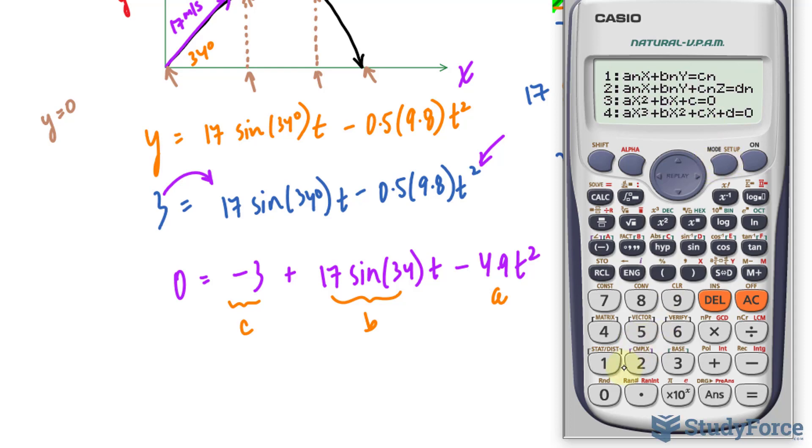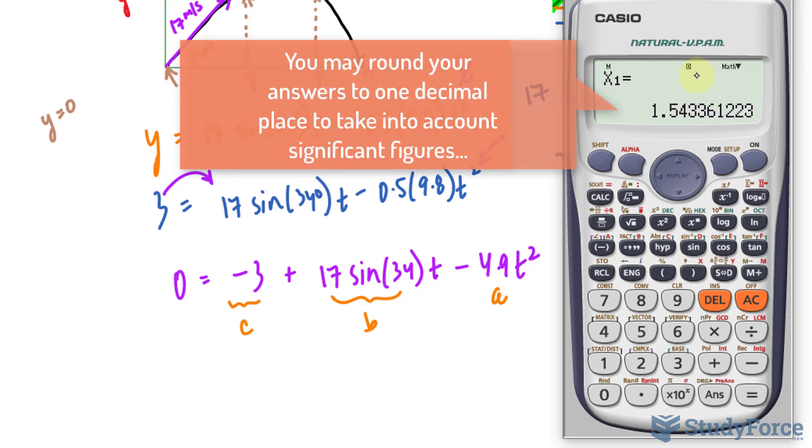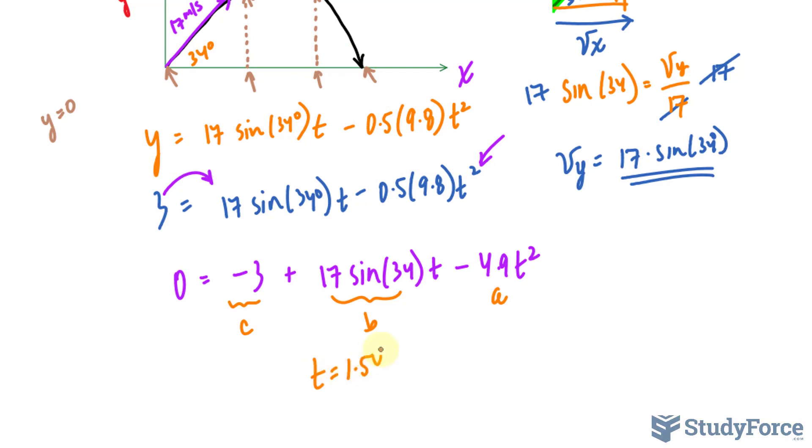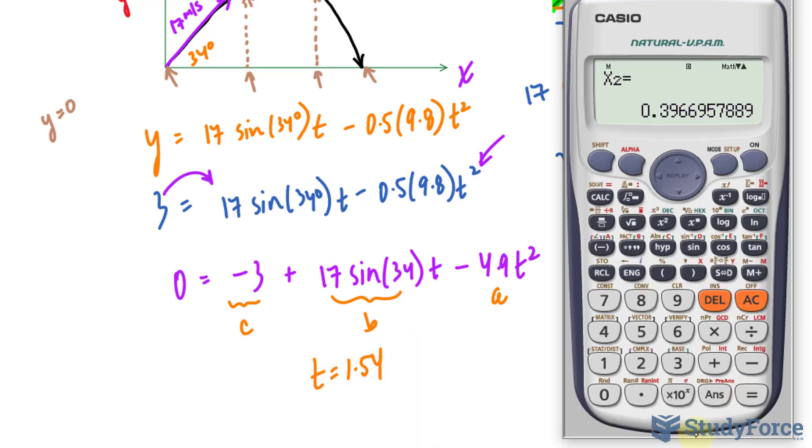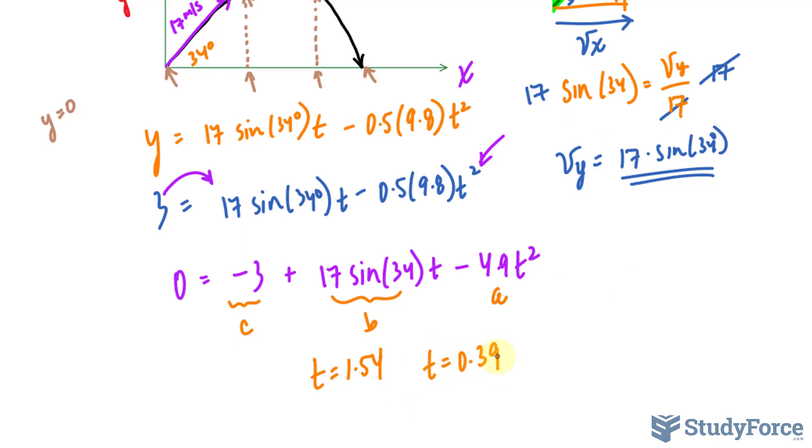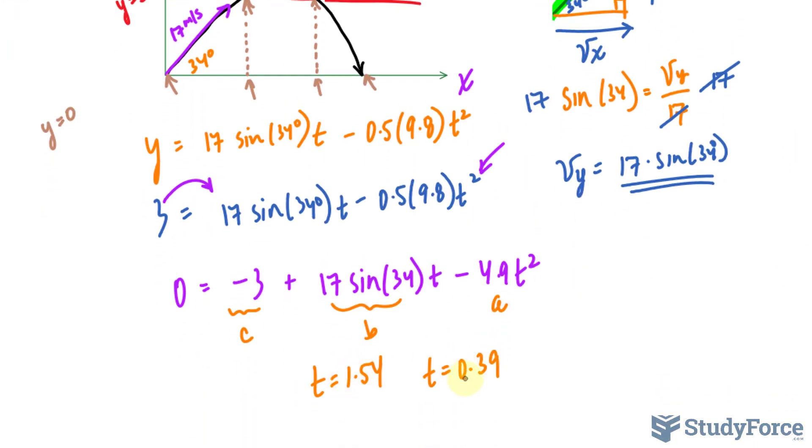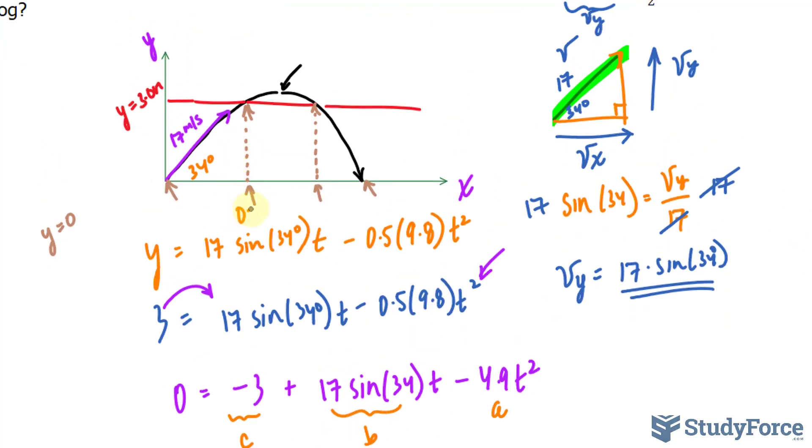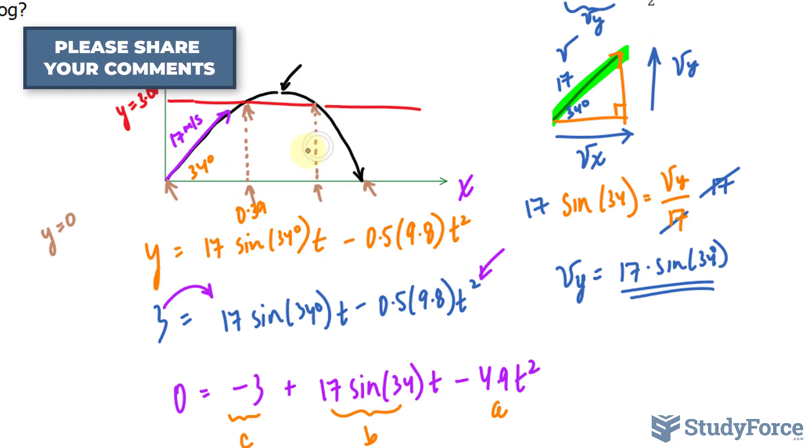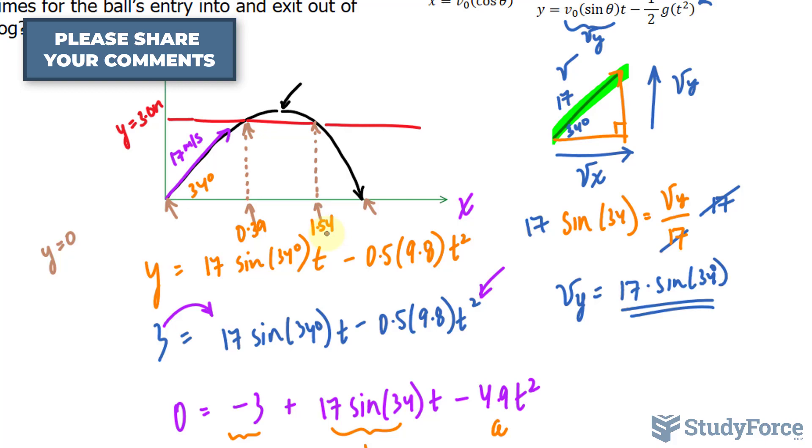I like to use a mode on my calculator that enables me to do that quickly. So my a value is negative 4.9, my b value is 17 times sine 34, like this, and that actually equals to 9.5062, so you could have found that out earlier if you liked, and your c value is negative 3. We get an x value, in our case t, time of 1.54 and another time that is 0.39. This means that at this initial velocity and at this angle, it will pass the fog initially at 0.39, so that's 0.39 and then it will come out of the fog at 1.54 seconds.